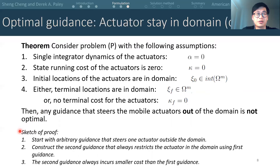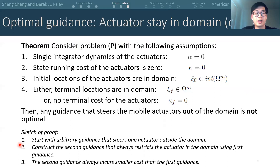Here we provide a sketch of the proof. We start from an arbitrary guidance that steers one actuator outside the domain. Then we construct another guidance which is identical to the first, except that we flip the sign of the second guidance whenever the actuator hits the boundary of the spatial domain. So the second guidance can always restrict the actuators in domain. The mobility-related costs incurred by the first guidance will be equal or greater than those of the second guidance, and the first guidance will incur more PDE-related costs due to the property of the infinite dimensional LQR. This result saves the effort of constraining the actuators to stay within the domain.